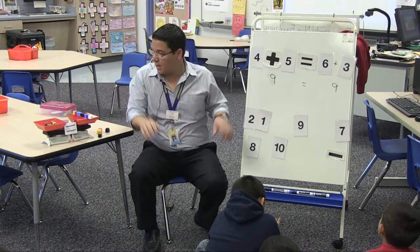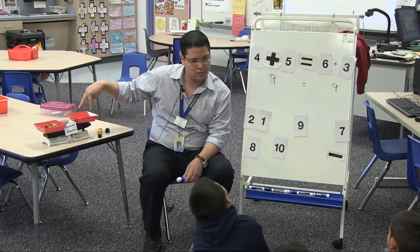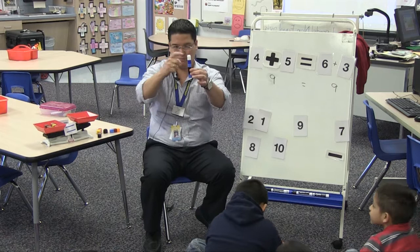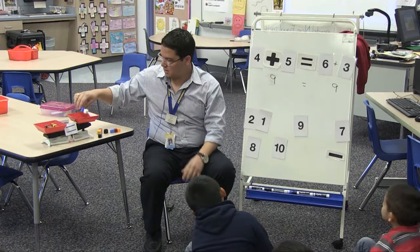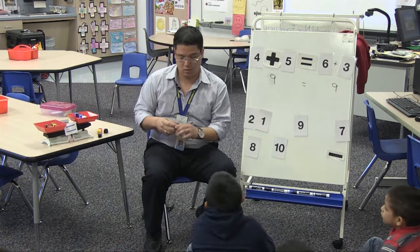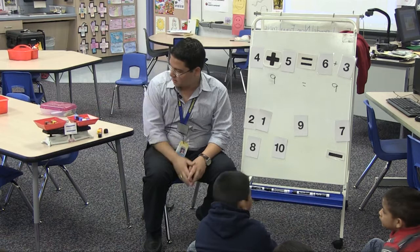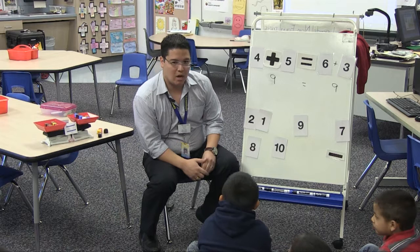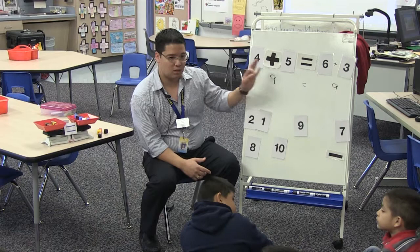I already have four plus five on one side, right? Now I need to put six plus three on the other side. Can you count with me? One, two, three, four, five, six. I need three more — one, two, three. Six plus three. It's balanced! So it means that my number sentence is correct. It's true because both sides are equal.